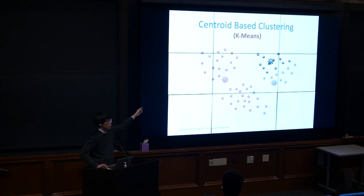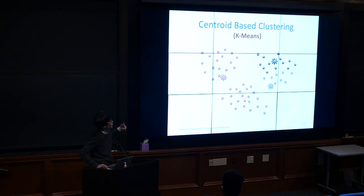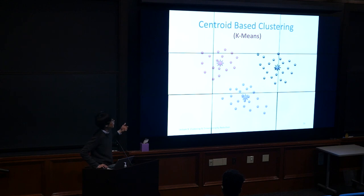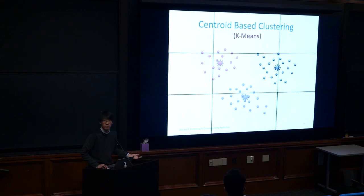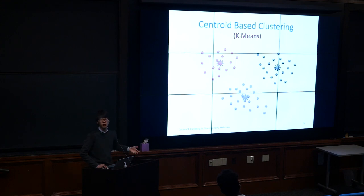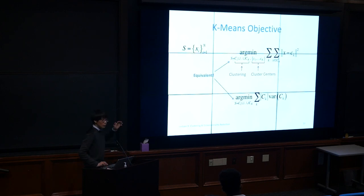We keep iterating: reassign points to nearest centers, recalculate the mean centers, reassign again, recalculate again — until eventually doing this update changes nothing. We've converged: the mean centers no longer move and no points get reassigned to different cluster centers.